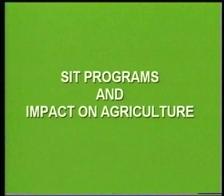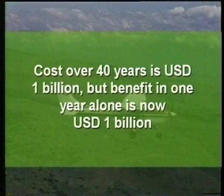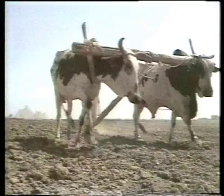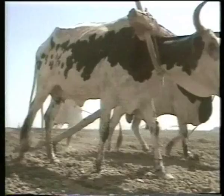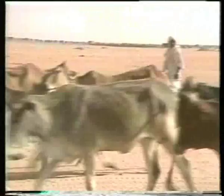SIT programs have had a significant impact on agriculture. In the case of the New World Screwworm, the total cost over the past 40 years of the screwworm fly eradication program for all of North and Central America is about 1 billion U.S. dollars. This compares with the economic benefit to the cattle industry amounting to about 1 billion U.S. dollars each year that the region continues to remain screwworm free. The discovery of the screwworm in Libya in 1988 led to another successful SIT eradication program, completed in 1991, which prevented the establishment of this major pest in Africa and the Mediterranean basin.